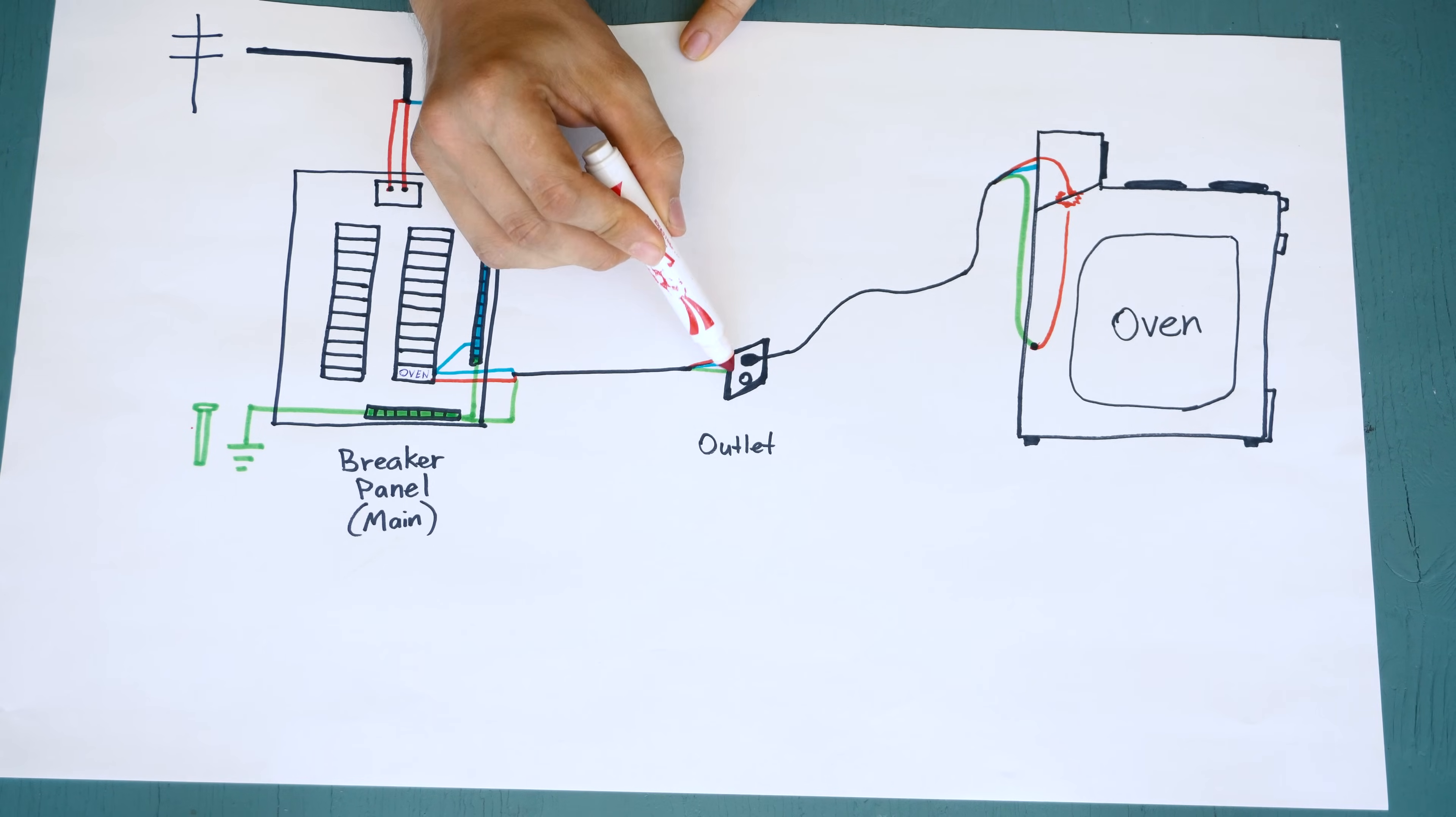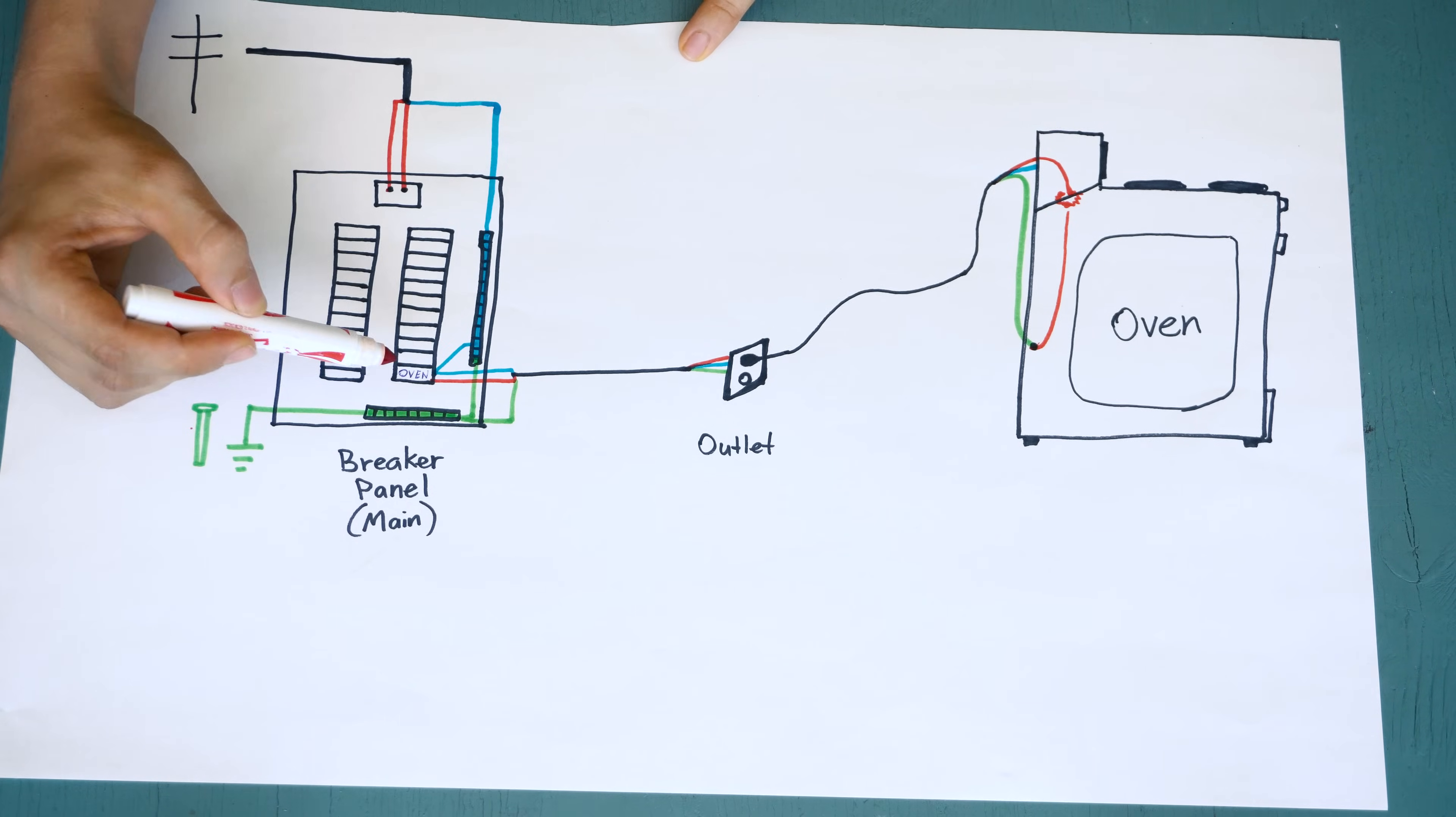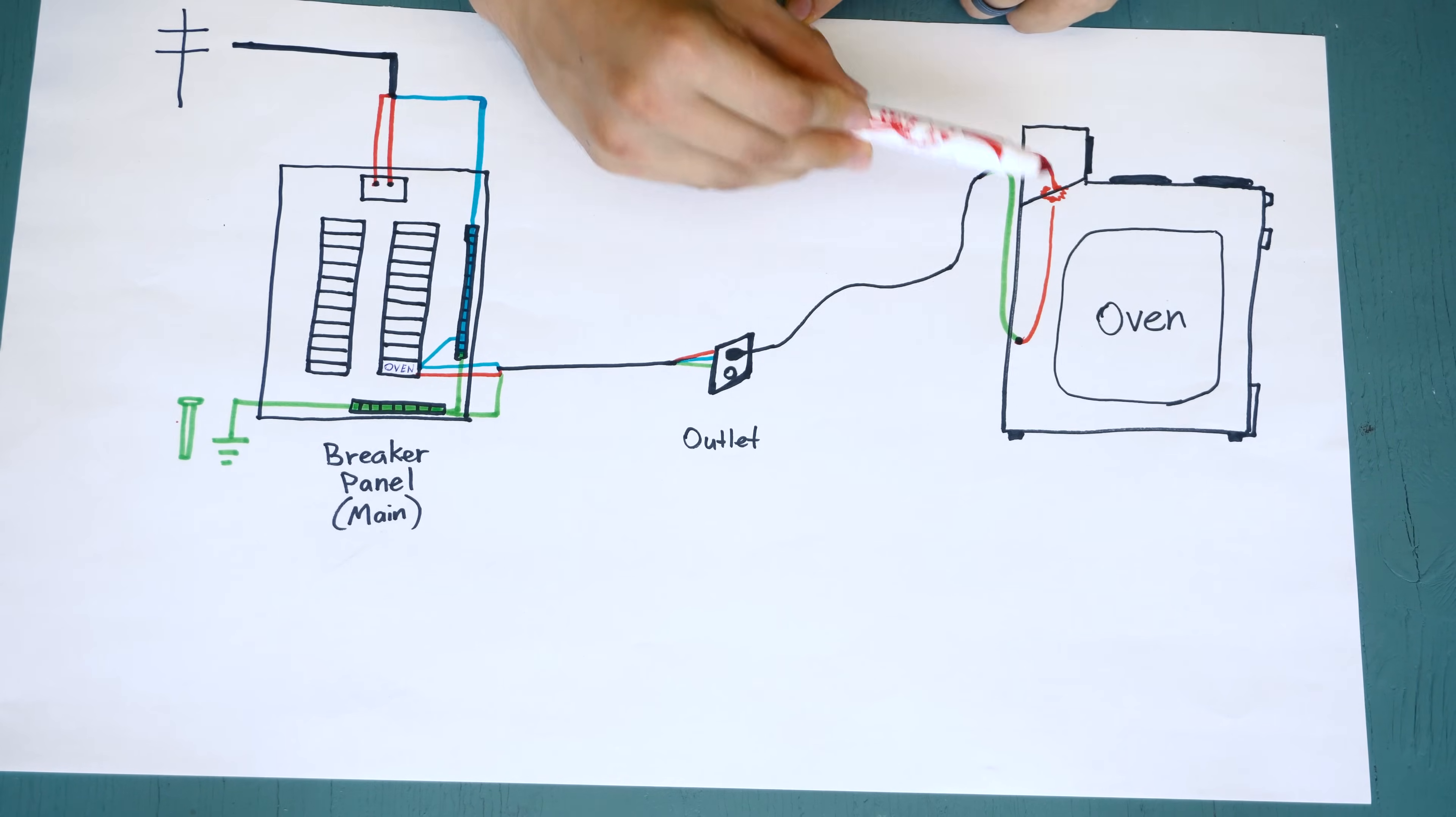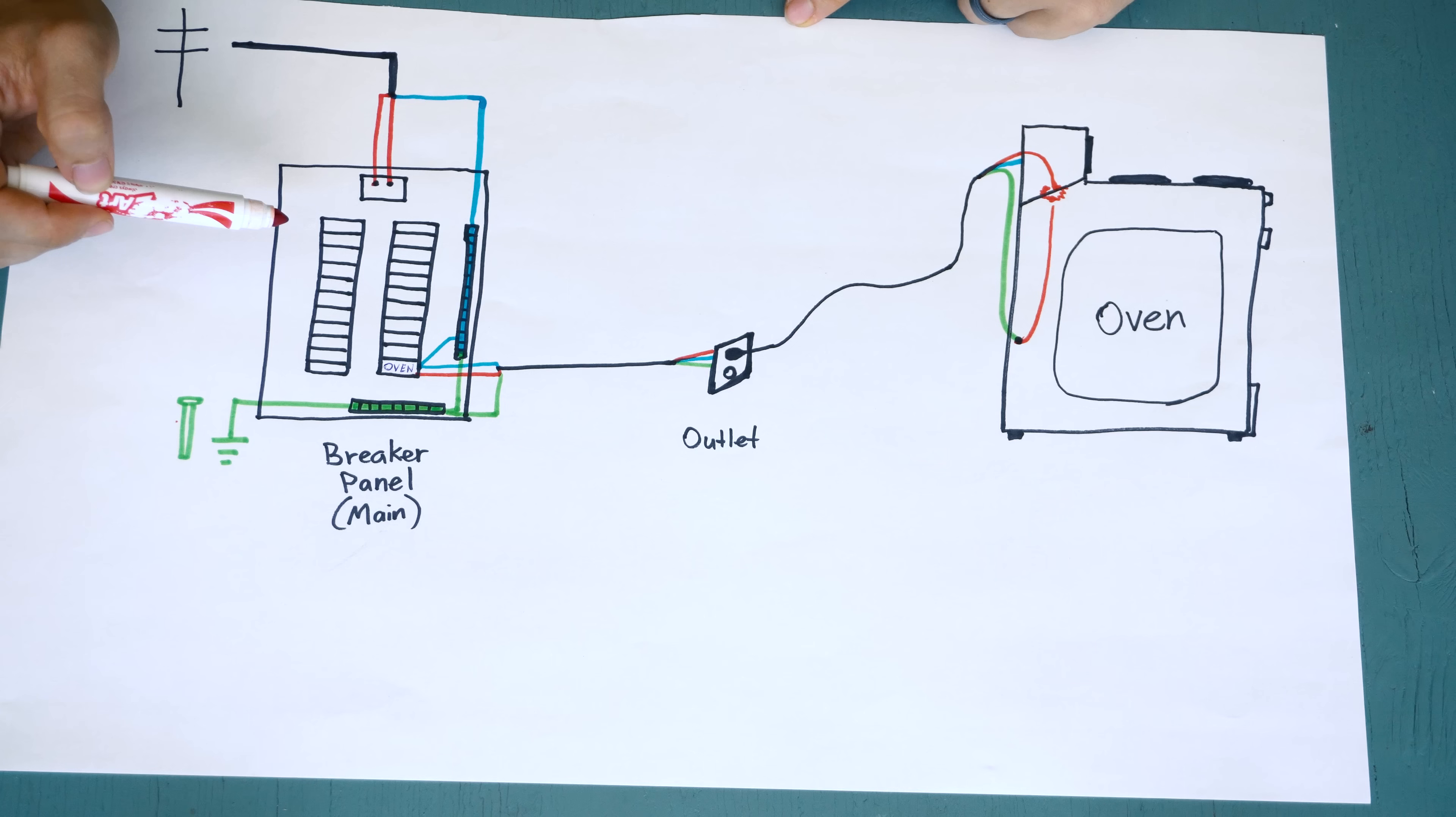So if it is shorting out right here, electricity will choose the path of lower resistance, which would be the ground, and it'll go back and hopefully once again overload the circuit, or if there's a GFI in here, trip that and turn the power off. So in summary, the ground is a safety that hopefully will never get used. Normal operation does not involve the ground, but when something does go weird, like a mouse chewing through a wire and the whole oven gets energized, that's when the ground kicks in and hopefully turns that breaker off real fast.